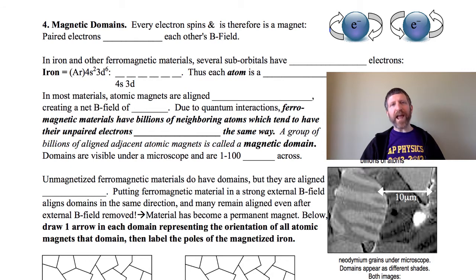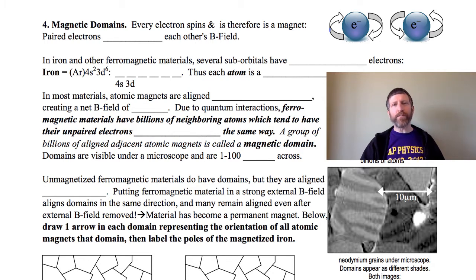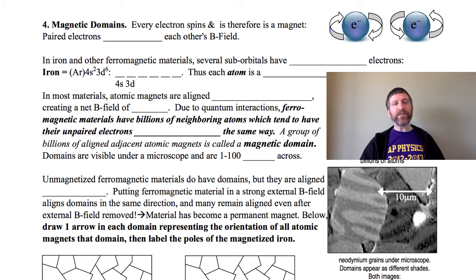We have to start with understanding that every electron spins. Now if you talk to a quantum mechanic they'll say it really doesn't spin, but it sure acts like it's spinning. So we can just use this assumption of classical mechanics that the electron is spinning to figure out what its magnetic field looks like.